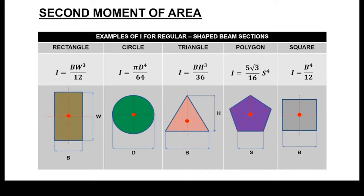When it comes to a rectangle, I is equal to b times w cubed over 12. When it comes to the circle, I is equal to pi d to the power of 4 over 64, where d is essentially the diameter of a beam with a circular cross section. For a beam with a triangular cross section, I is equal to the base times the height cubed over 36. For a beam with a polygon cross profile, I is equal to 5 root 3 over 16 times s to the power of 4, where s is the length of the given side. This only applies to a regular polygon.